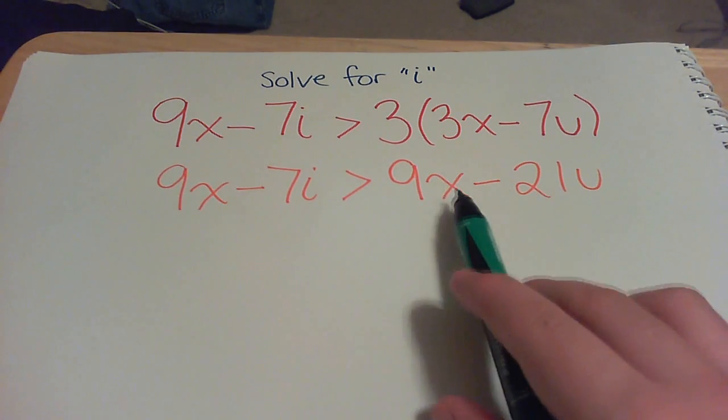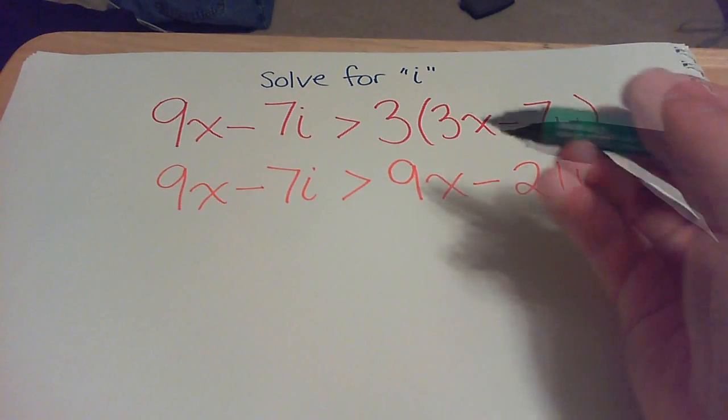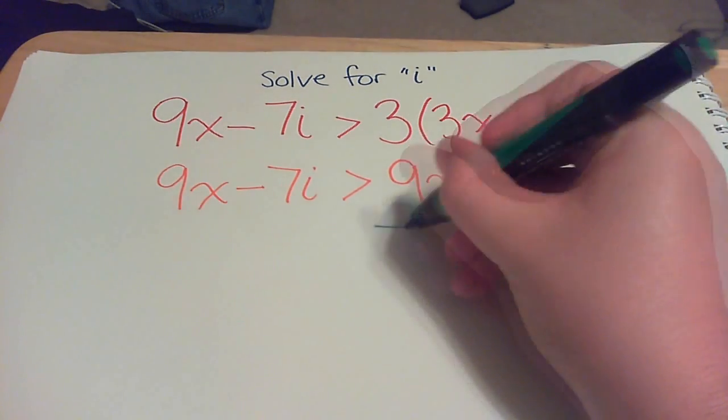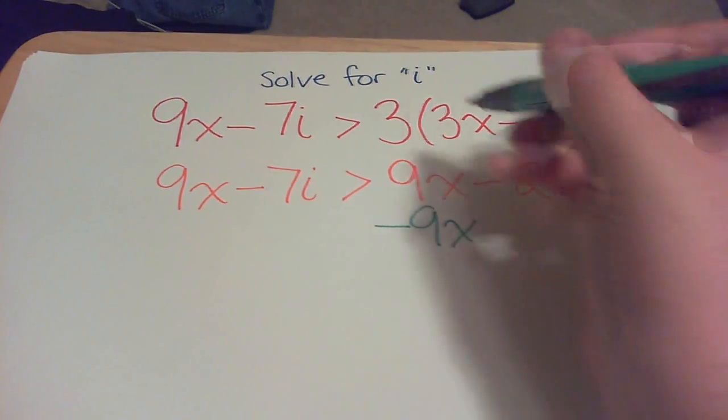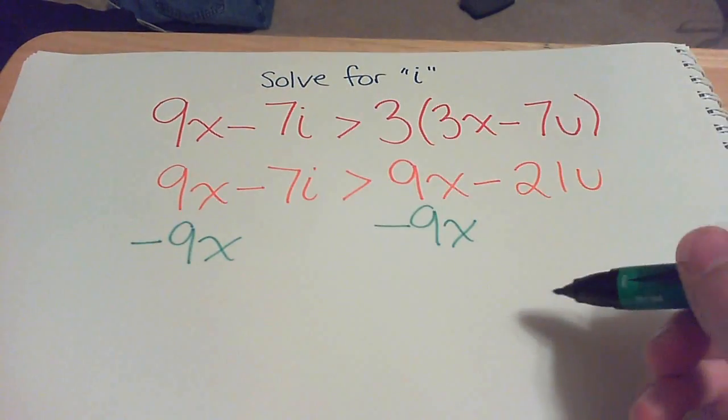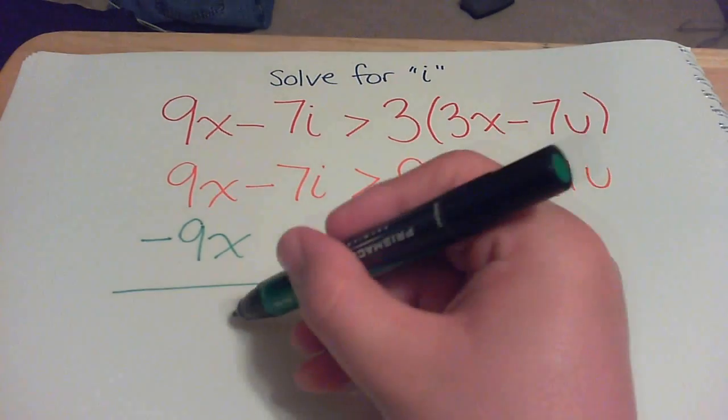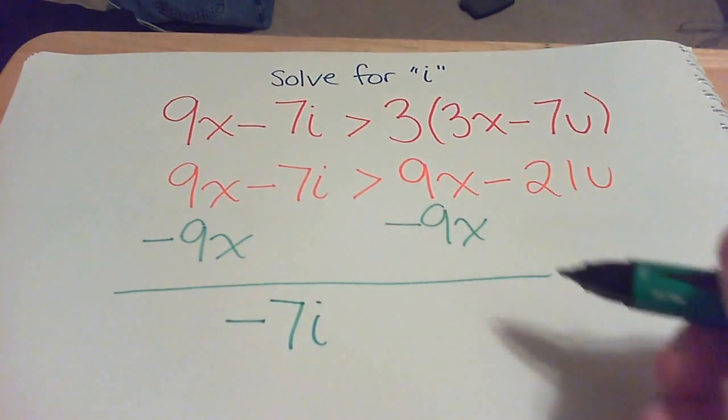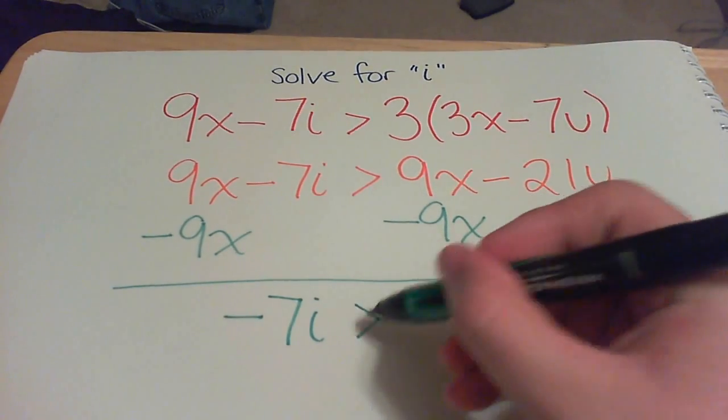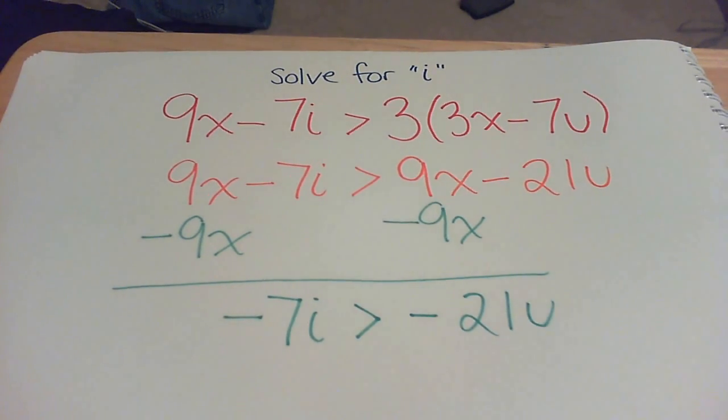Next is you're just going to subtract the 9x's from both sides, so they'll pretty much just cancel out. So minus 9x and minus 9x. So pretty much what that will give you is negative 7i is greater than negative 21u. So that's what you will have after that.